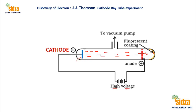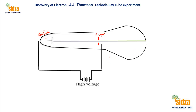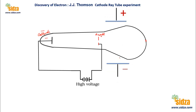In a normal discharge tube experiment, the cathode radiations travel in a straight line. But once you apply an electric potential difference with positive and negative electrodes across the discharge tube, J.J. Thomson found that these radiations slightly bend towards the positive electrode. This confirms that the radiations are not neutral but negatively charged, because they are attracted towards the positive electrode.